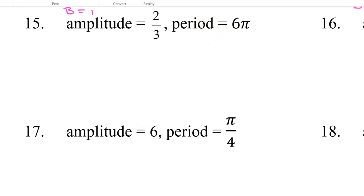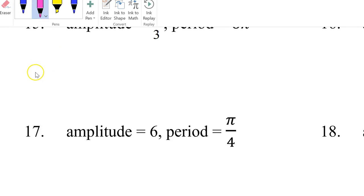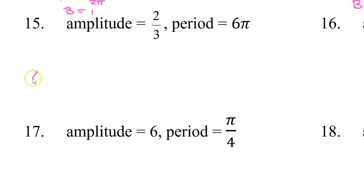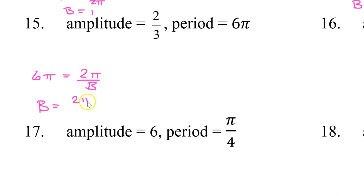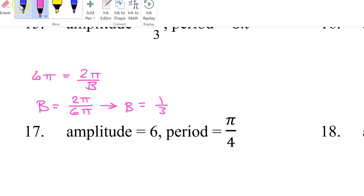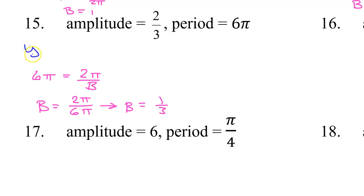For number 15, the period always equals 2 pi over b. Swapping gives b equals 2 pi over 6 pi. The pi's cancel out and I get b equals 1 third. So the equation is y equals 2 thirds cosine of 1 third x.